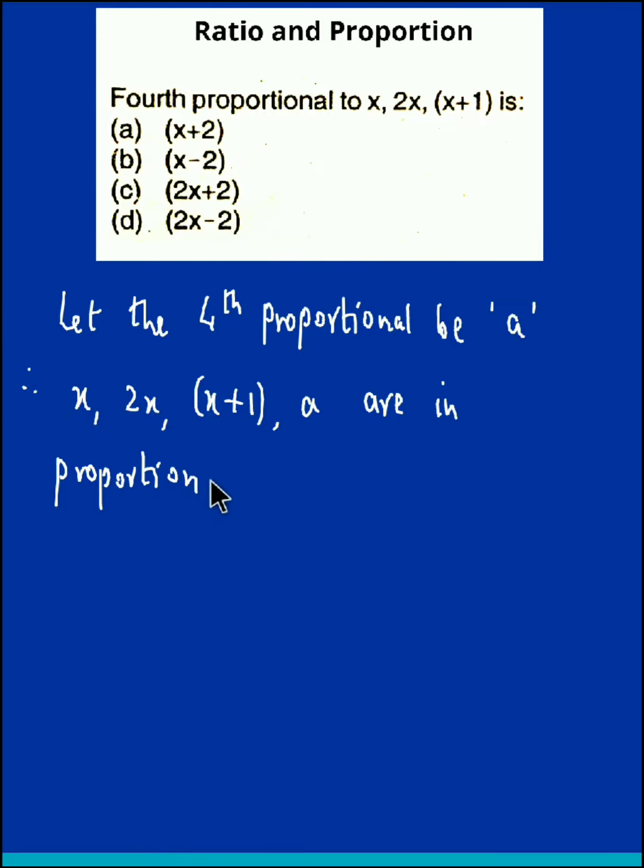Now we know that if A, B, C, D are in proportion, then A upon B is equal to C upon D.